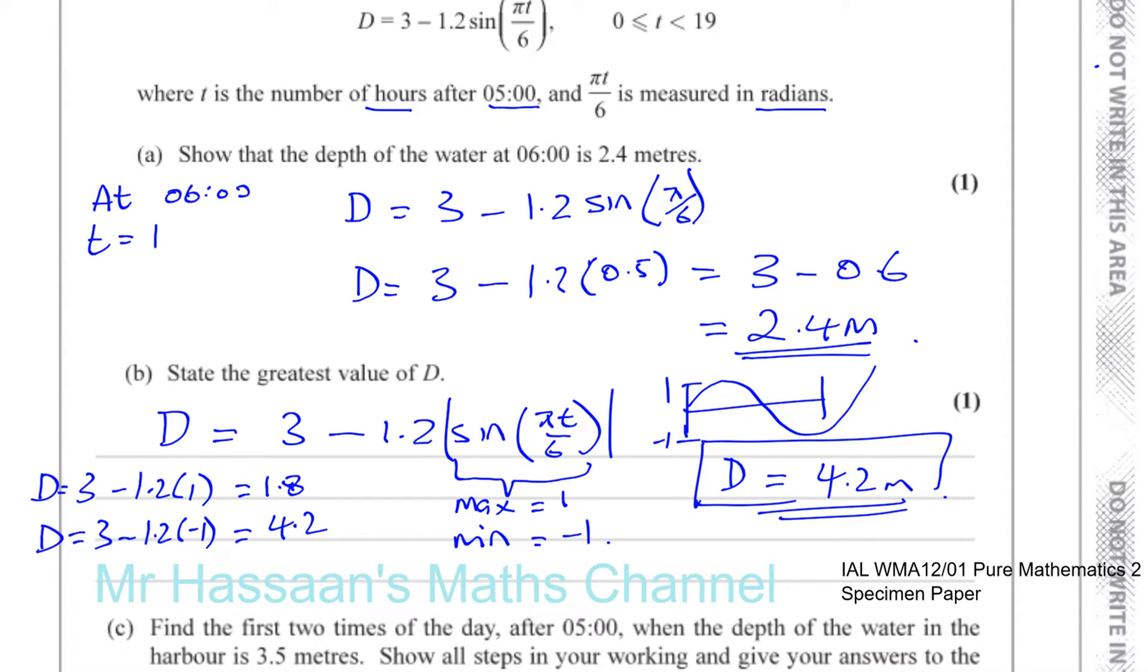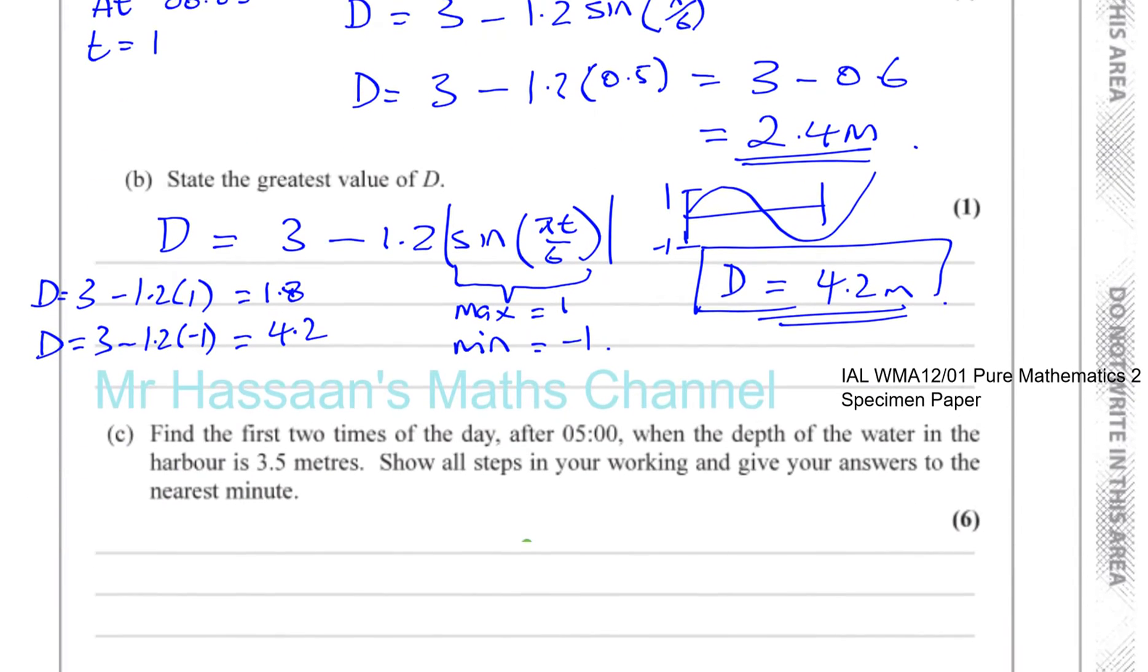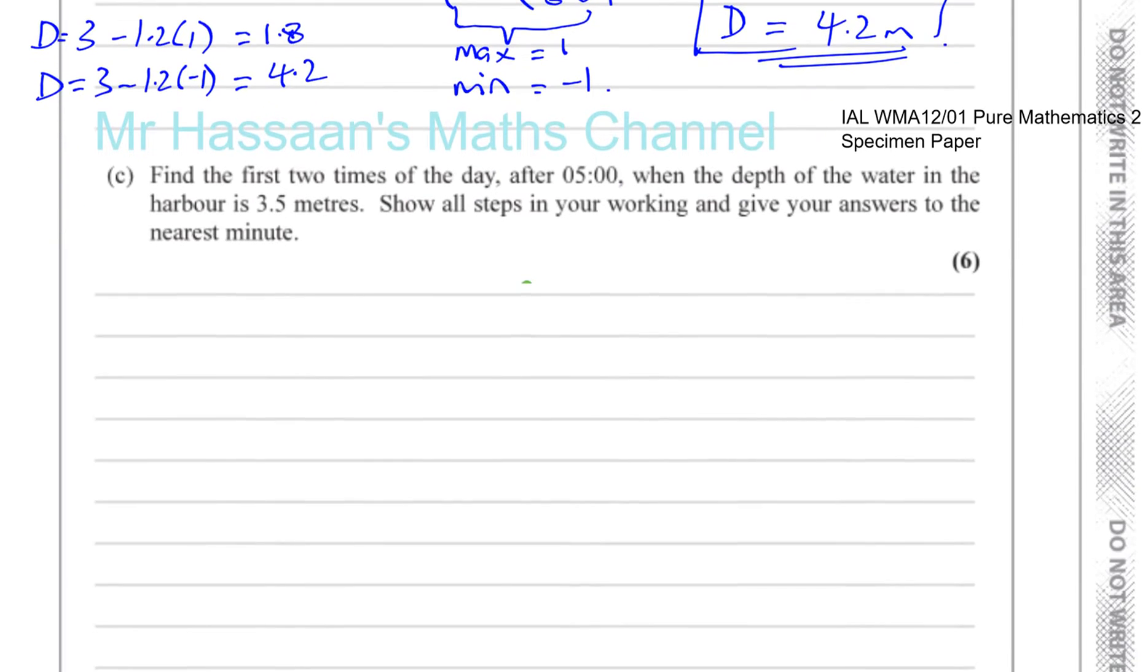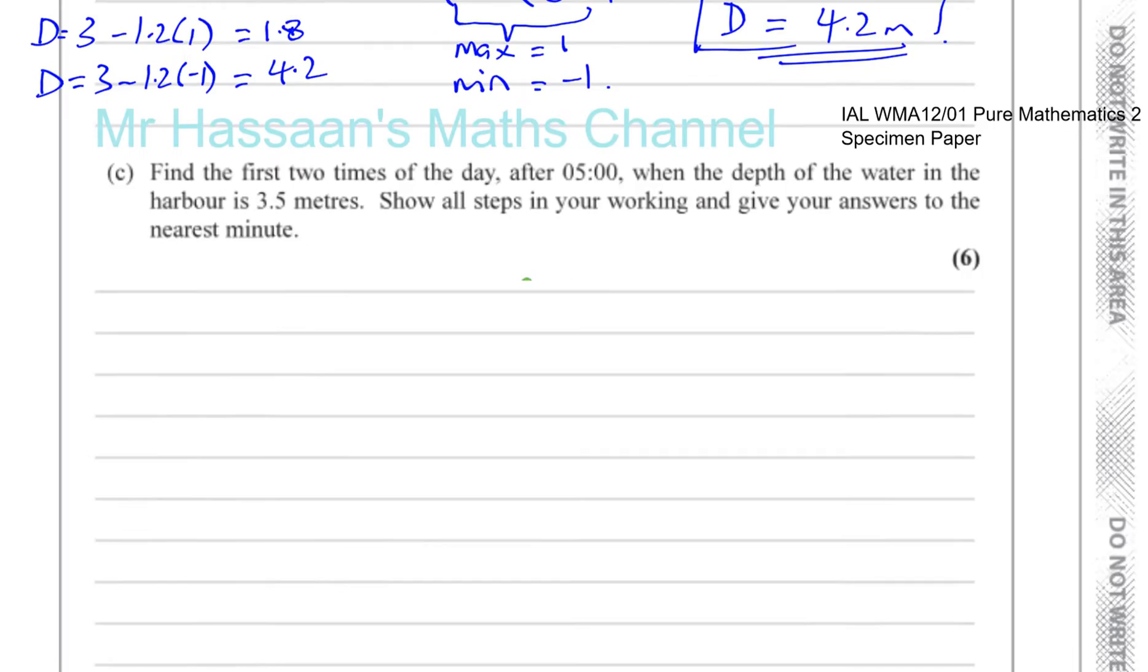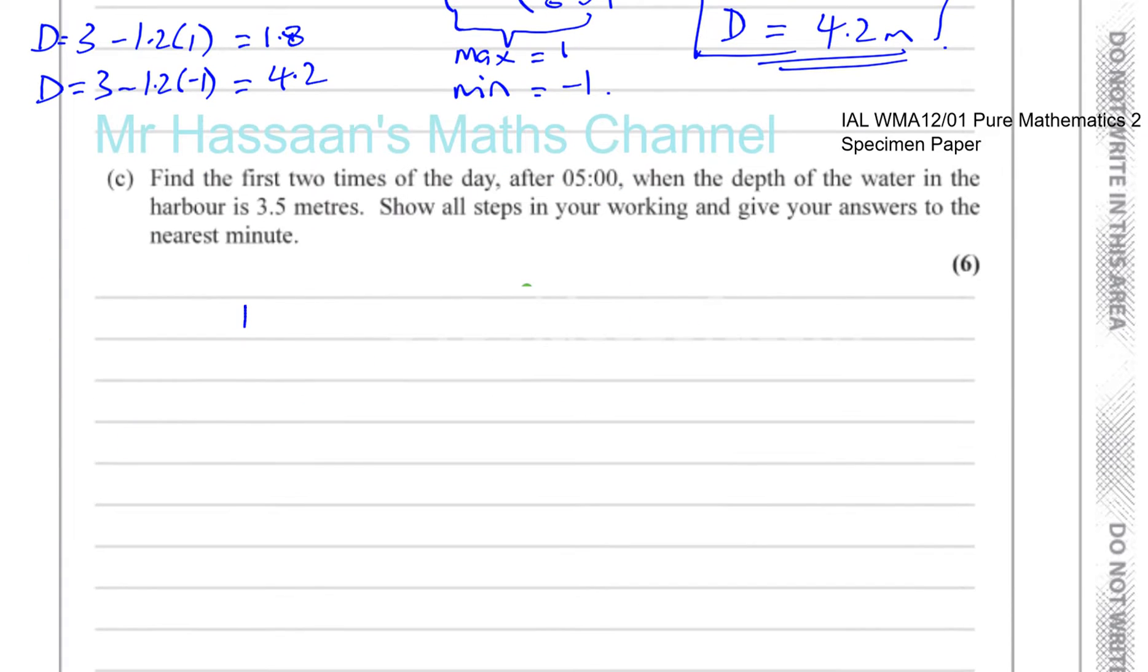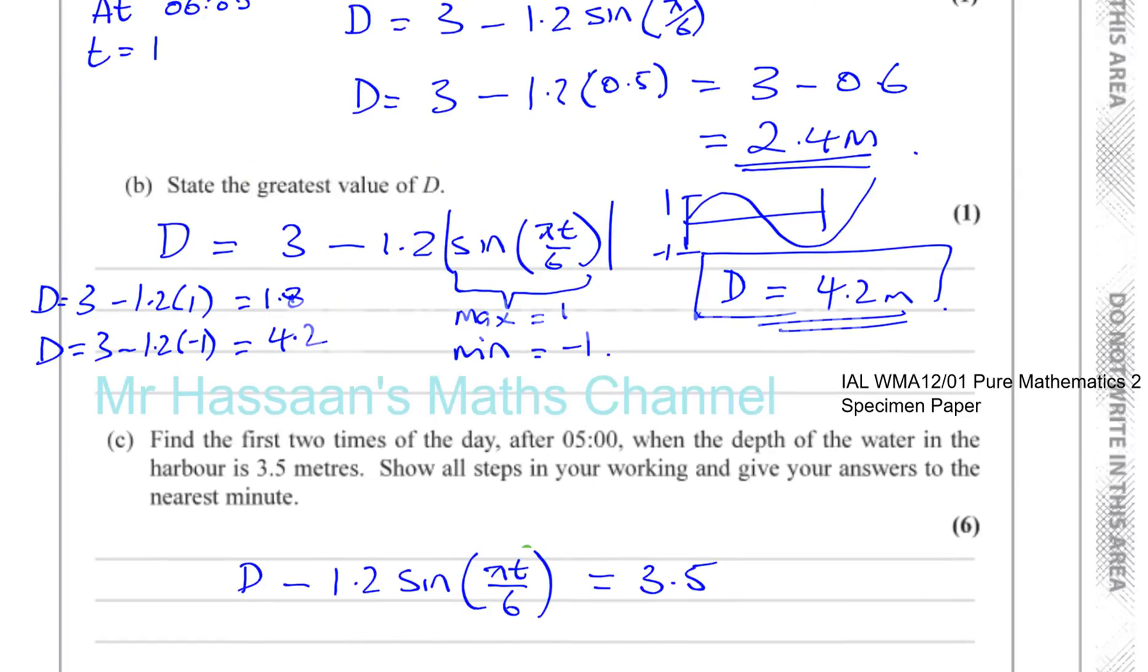Part (c) says find the first two times of the day after 5am when the depth of the water in the harbor is 3.5 meters. So we've got D equals 3 minus 1.2 times sine pi t over 6. We're going to find when the height is 3.5 meters, the first two times of the day. Now, let's look at our limits.